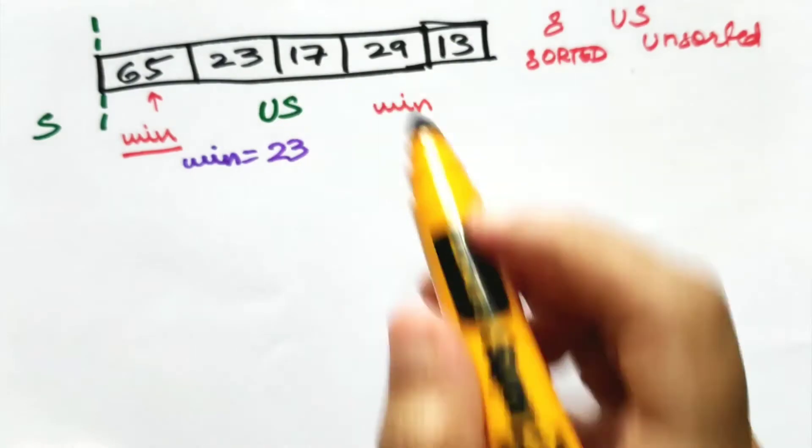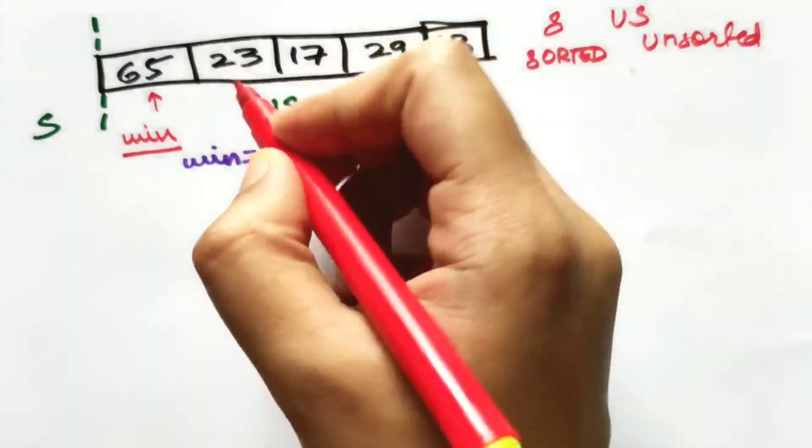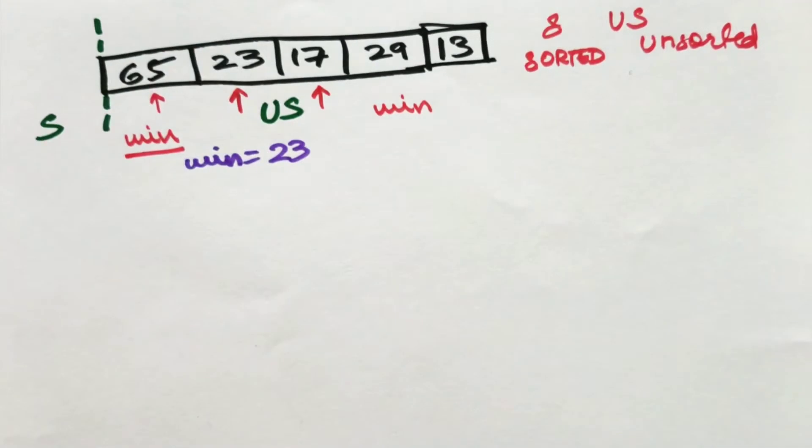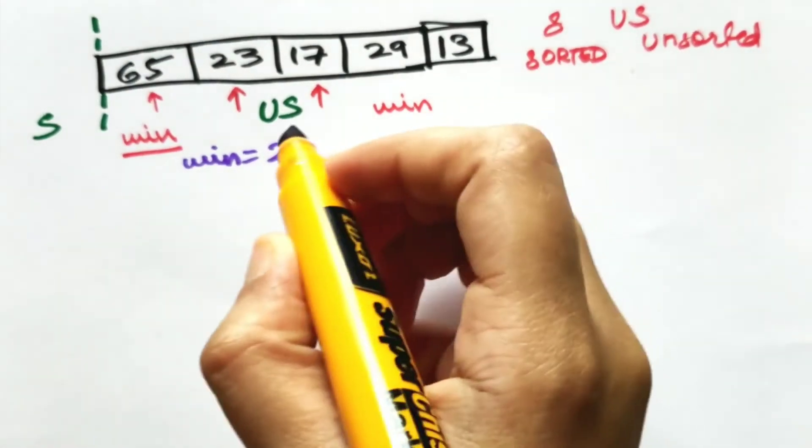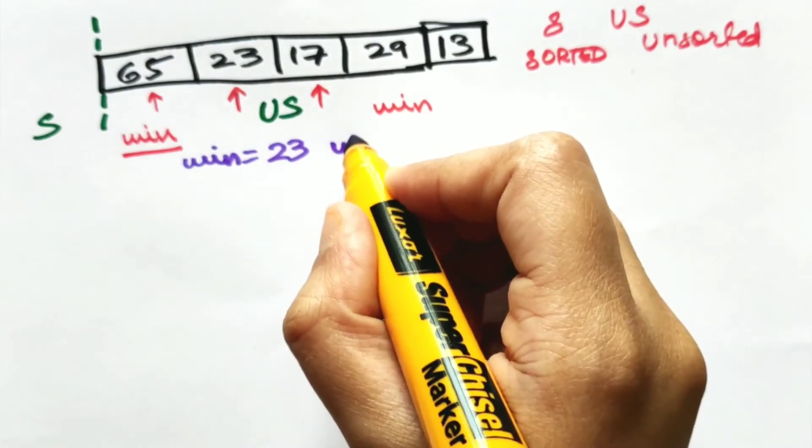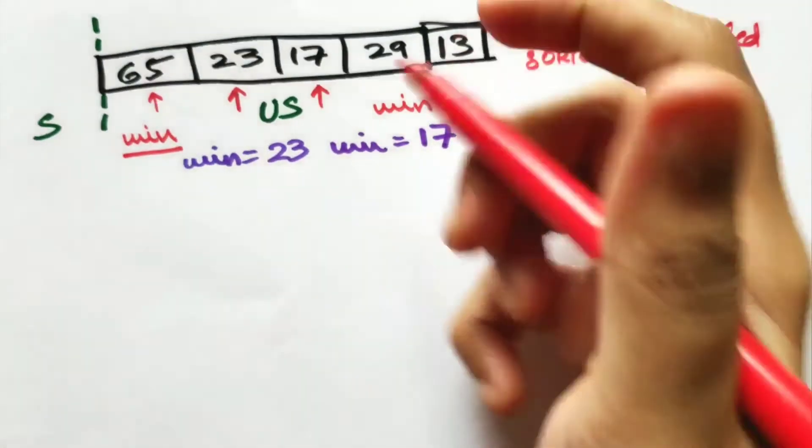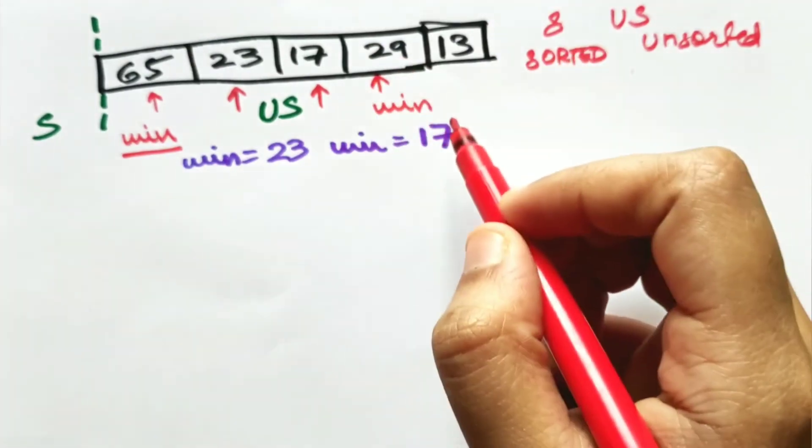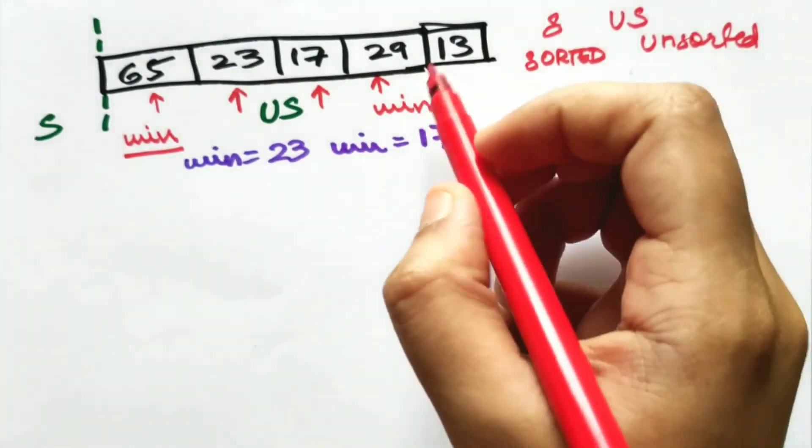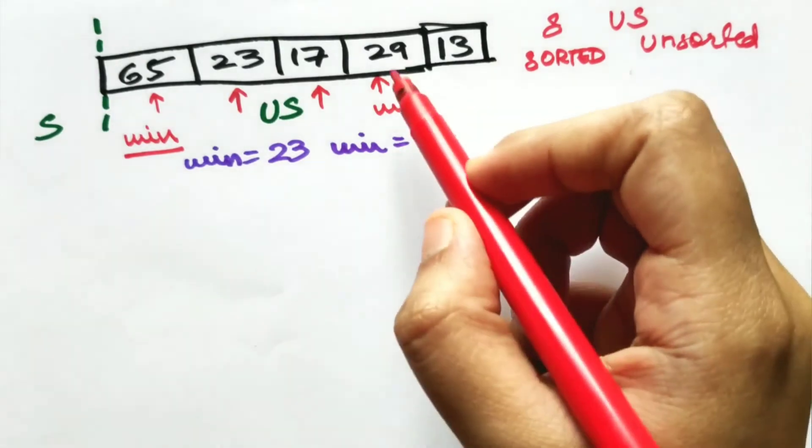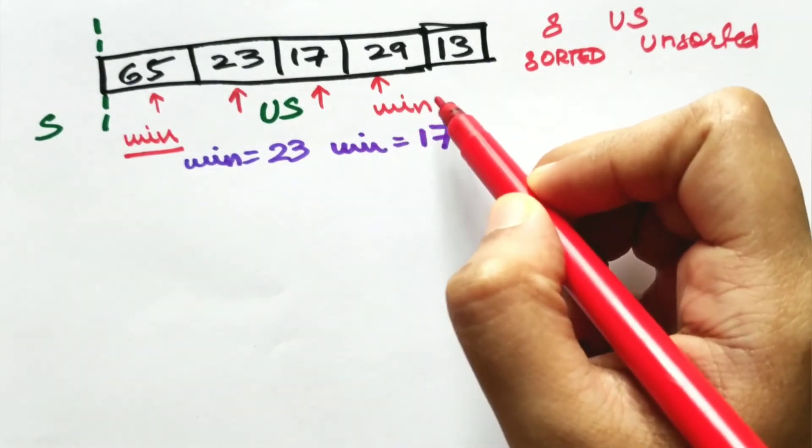Next you check for 17. I'll just be putting arrows here. You'll keep a note of that. Next you'll check for 17. Is 17 less than 23? Yes, of course. So you make minimum equal to 17. Now you check 17 and 29. 29 is greater than 17. No need to check it or rather say no need to overwrite minimum. And next you check 17 and 13.